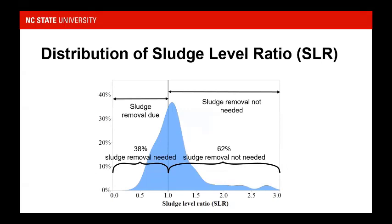For the sludge level ratio distribution, 62% of data points did not need sludge removal. However, the peak is just over a sludge level ratio of one, indicating those lagoons are approaching the need for sludge removal. About 38% are already in a position where they need to plan for sludge removal.